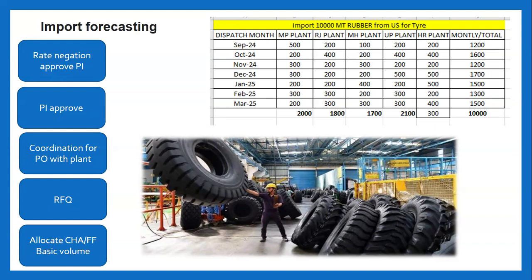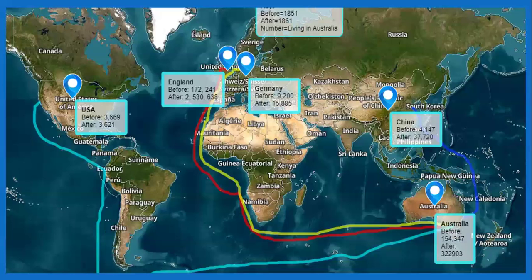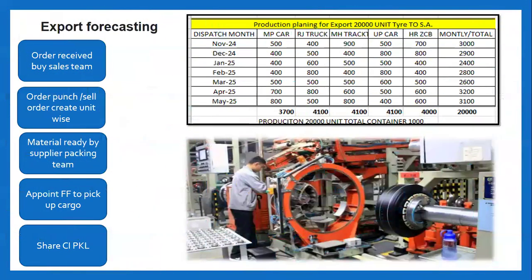That previous session was also important — you can watch it by going to the playlist. In this session we will understand that after importing 10,000 metric tons of rubber to different locations, we need to manufacture these 20,000 tires. This is the forecasting of the manufacturing: in November we need to manufacture 3,000 tires, and in December 2,900 tires.